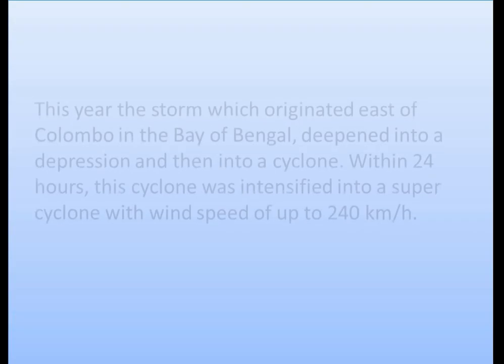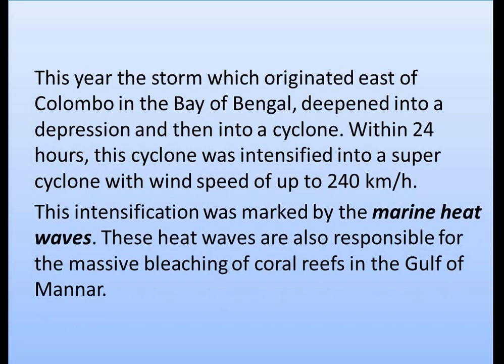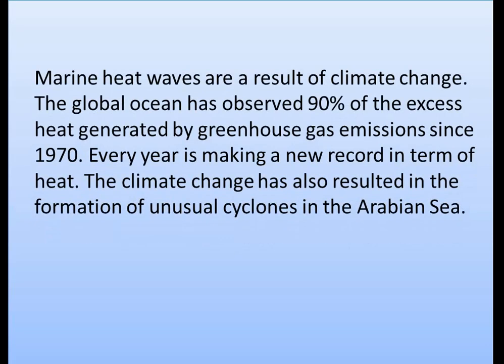This storm originated east of Colombo in the Bay of Bengal and deepened into a depression and then into a cyclone within 24 hours. Within 24 hours, it was further intensified into a super cyclone with wind speed of up to 240 kilometers per hour. This intensification was driven by marine heat waves, which were also responsible for the massive bleaching of coral reefs in the Gulf of Mannar.